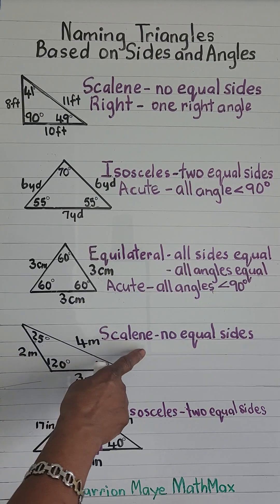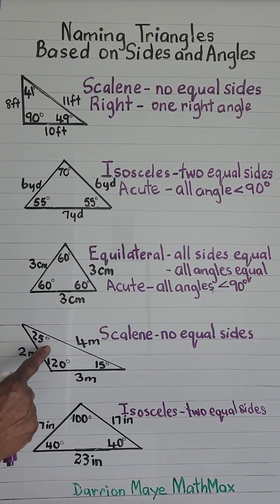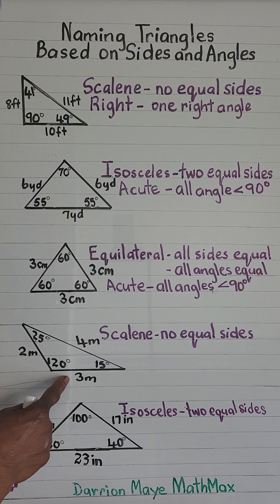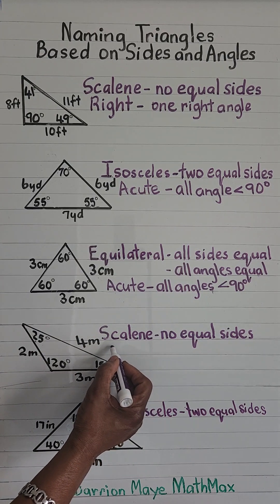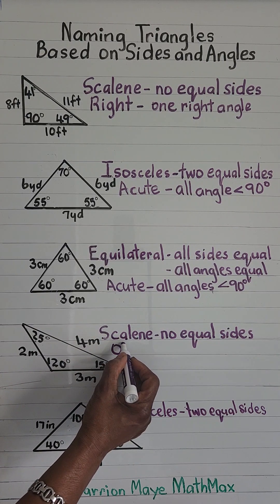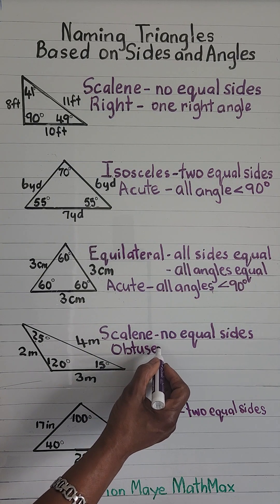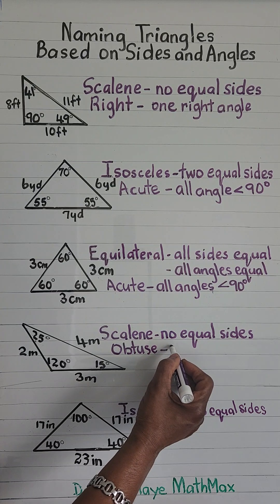Next is a scalene triangle with no equal sides. This triangle has angles of 120 degrees, 25 degrees, and 15 degrees. It is called an obtuse triangle because it has one angle that is more than 90 degrees. So this is obtuse — one angle more than 90 degrees.